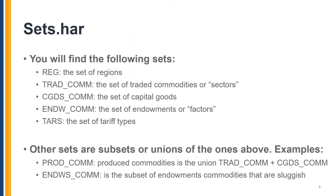The sets.har file will always have the following sets used in the database. You will always find REG, the set of regions; TradeCOM, the set of traded commodities, or what we often call sectors; CGDSCOM, the set of capital goods; EndowCOM, the set of endowment commodities, or what we might call factors; and TARS, the set of tariff types. In addition to these, you will find a number of other sets that will either be subsets or unions of these.